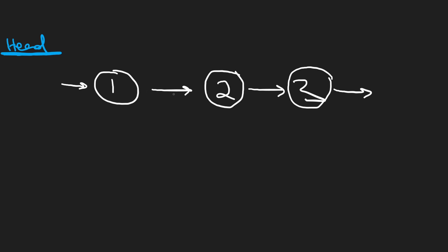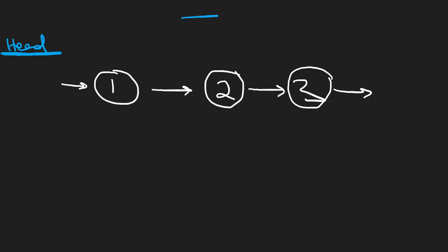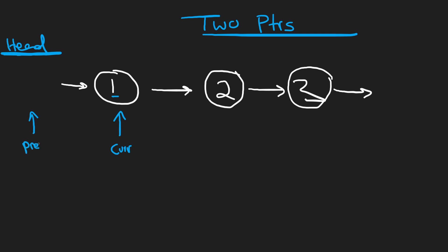We can do this with two pointers because we want to reverse it. From the perspective of this node, instead of the next pointer pointing at three, we want it to point at the previous node, one. So if we want to do this iteratively, we can use two pointers. We can initialize a current pointer to the first node, which is our head, and also maintain a previous pointer, which initially is going to be set to null. For the first node one, we're going to take the next pointer and reverse it, so now the next pointer is going to be pointing at null. This is now going to be the last element in our new reversed linked list.